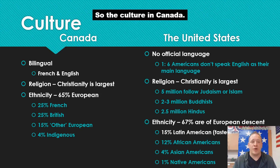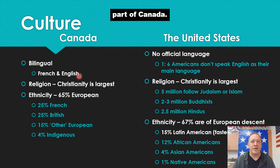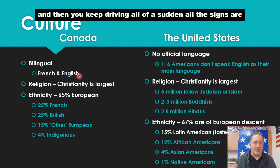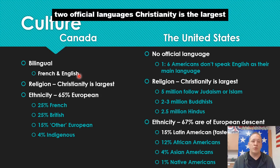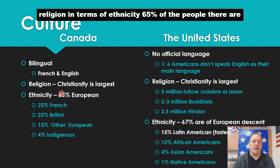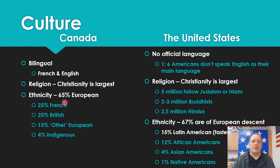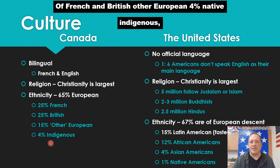Let's talk culture — another part of human geography. In Canada, they have two official languages: both French and English. Part of Canada you'll drive through and all the signs will be in French, then keep driving and suddenly all the signs are in English. Christianity is the largest religion. In terms of ethnicity, 65% of the people there are of European descent — a lot of French and British — and 4% are native indigenous Canadians.